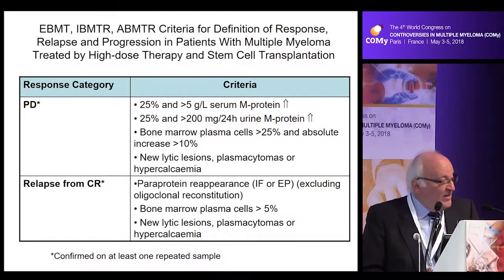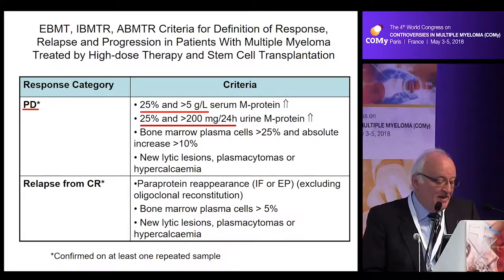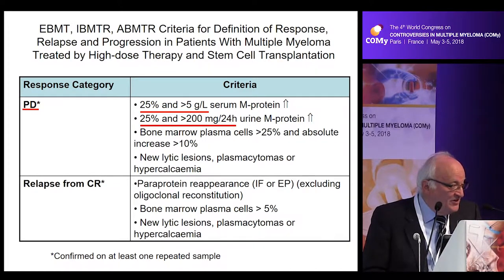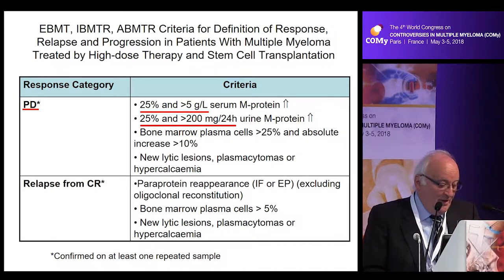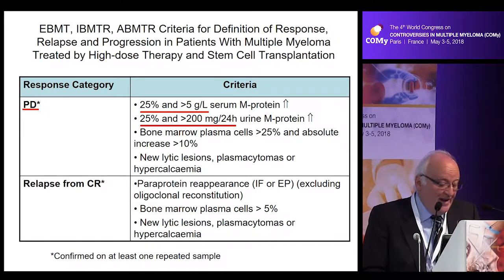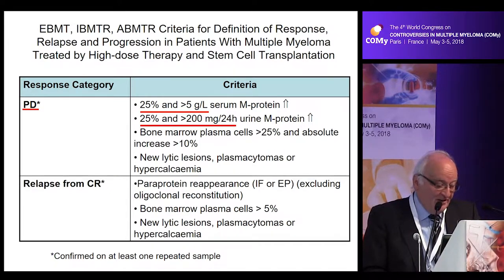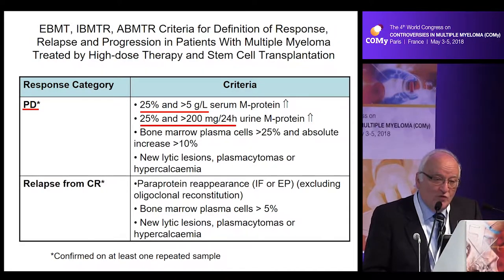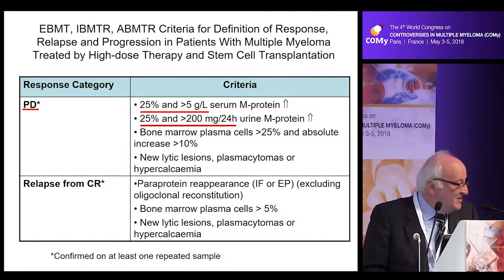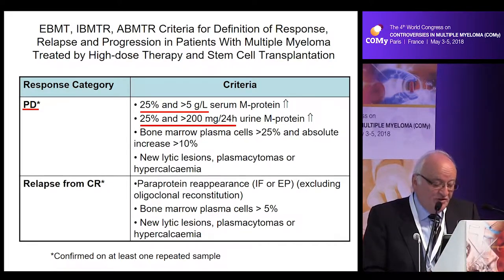Progression was defined by an increase of 20% in the serum M-protein, also requiring an absolute increase of 5 grams per liter, a 25% increase in urine protein excretion requiring an absolute increase of 200 milligrams per 24 hours, and an increase of 25% in bone marrow plasma cells. New lytic lesions, plasmacytomas, or hypercalcemia also define progressive disease.